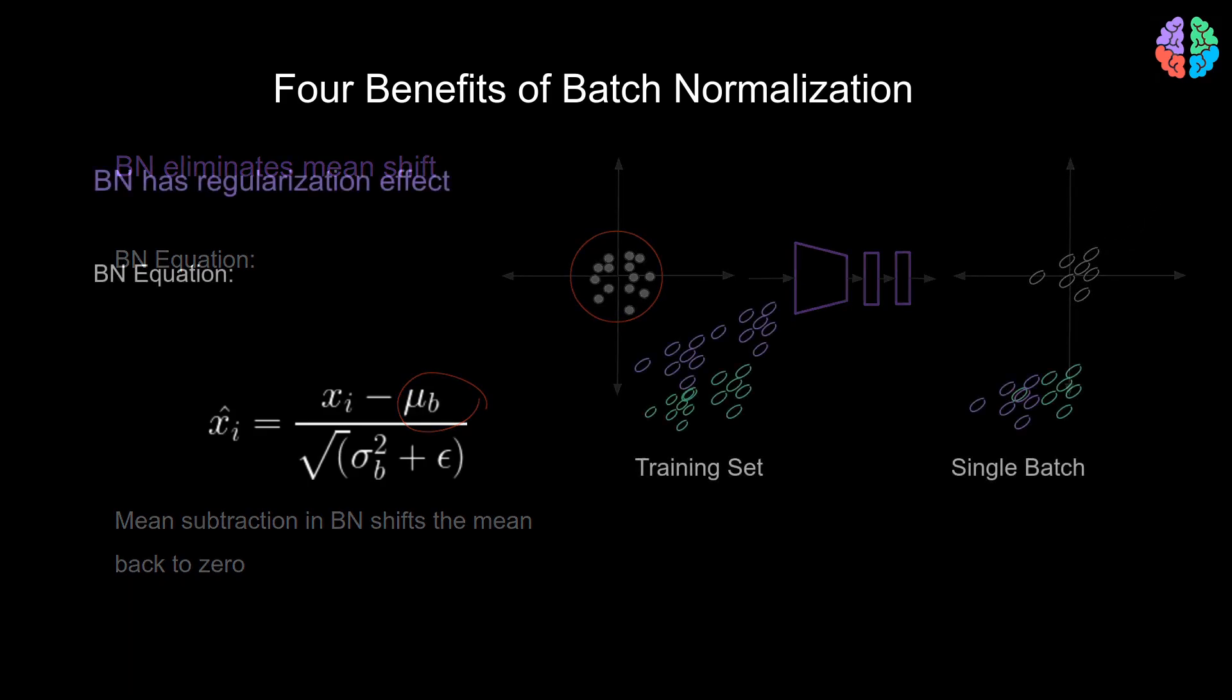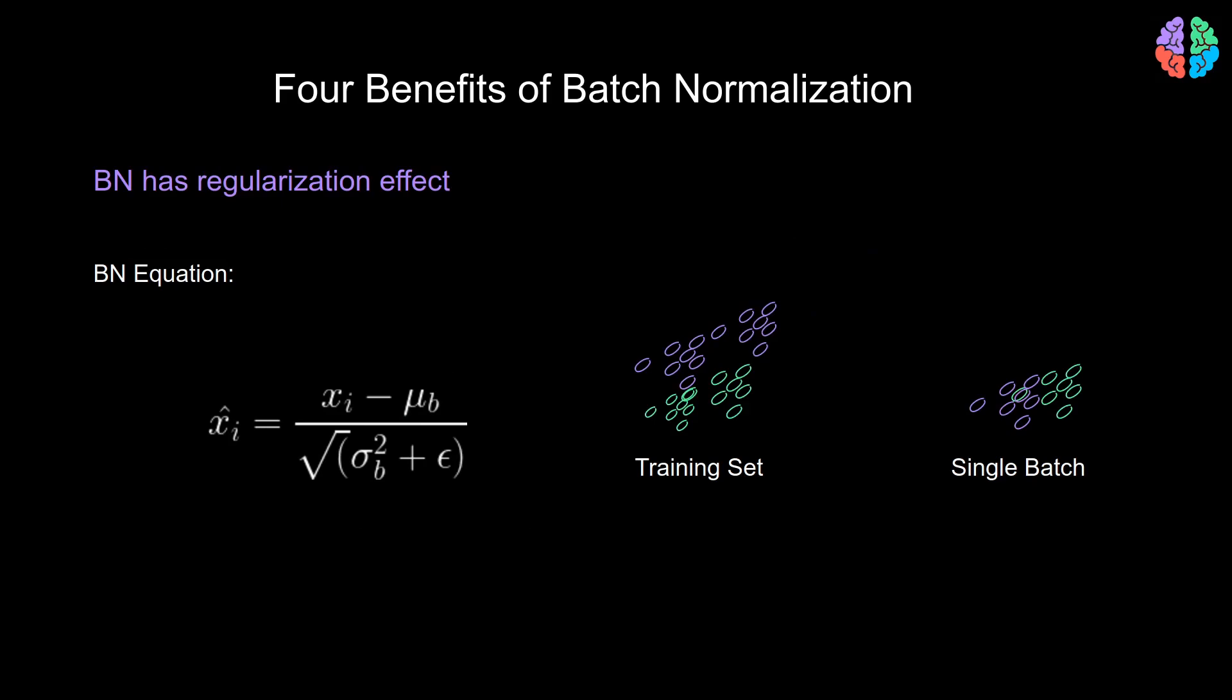A third benefit that the batch norm also has is the regularization effect. So the batch norm computes two parameters. One is the mean and the other is the variance of the input batch. If we look at the mean of the entire training data, its mean is not equal to the mean of a single batch. Similarly, if we look at the variance of the entire training data, it is not equal to the variance of a single batch. In short, we can say that the calculated mean and variance are noisy. And this noise effect is similar to the other regularization methods like dropouts, which introduce noise by switching off some nodes during training. And so batch norm is believed to bring in regularization effects to the network.